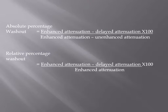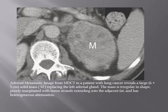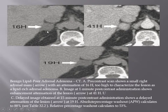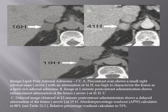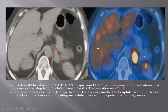Here are the questions on how to calculate absolute and relative percentage washout. A case of adrenal metastasis shows a mass measuring 6 by 5 cm replacing the left adrenal gland, with irregular shape and stranding to adjacent tissue. A case of adrenal adenoma — lipid-poor adenoma — shows 16 Hounsfield units on non-contrast CT, 41 on contrast CT, and delayed imaging at 10 to 15 minutes shows relative washout of more than 53% and absolute washout of 88%, confirming benign adenoma. PET-CT shows high FDG uptake in a left adrenal mass higher than the liver, confirming adrenal metastasis.